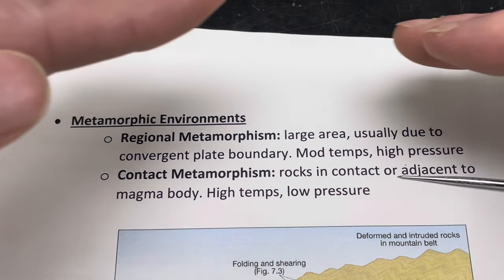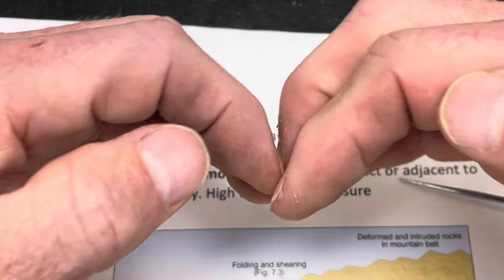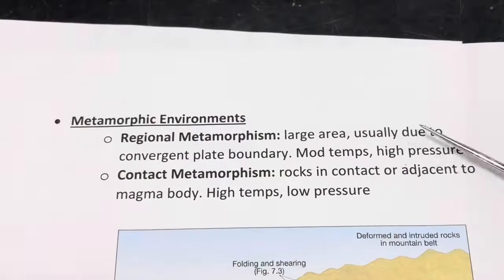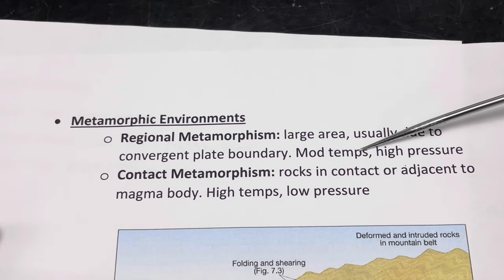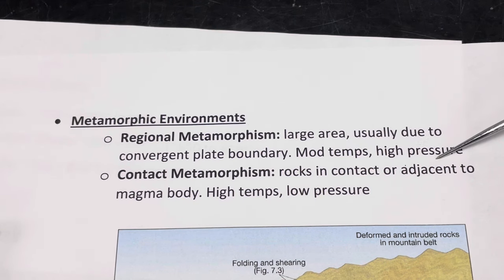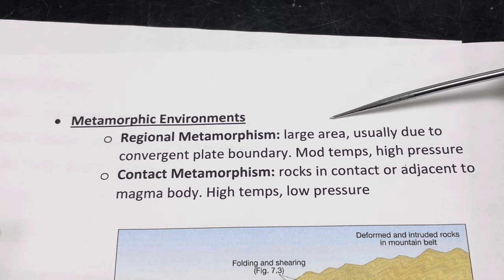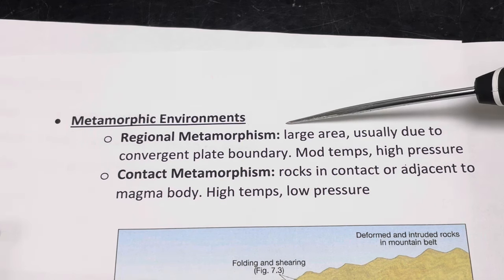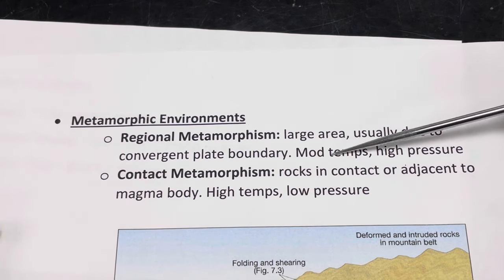As those two plates are brought together, the rocks in between are being squeezed, and so we would tend to get fairly high pressures, but maybe not as high temperatures — more like moderate temperatures. Regional metamorphism will change rocks into metamorphic rocks over a considerably large area.